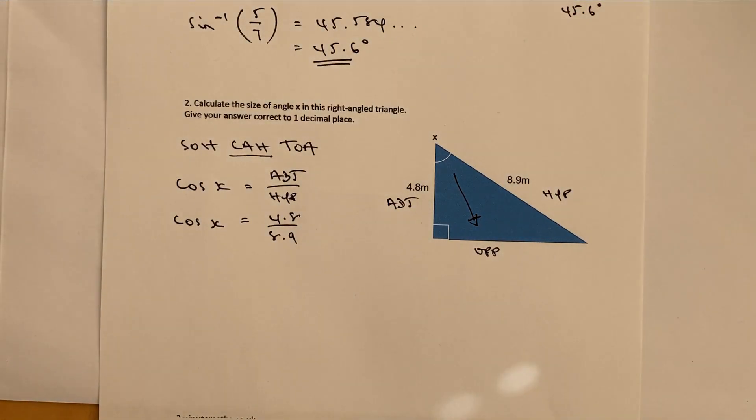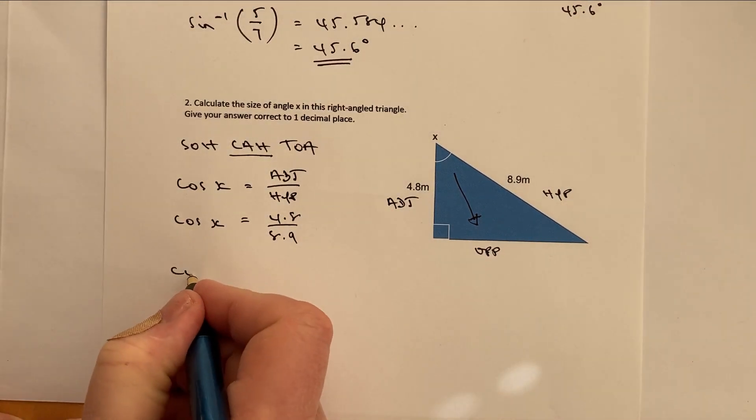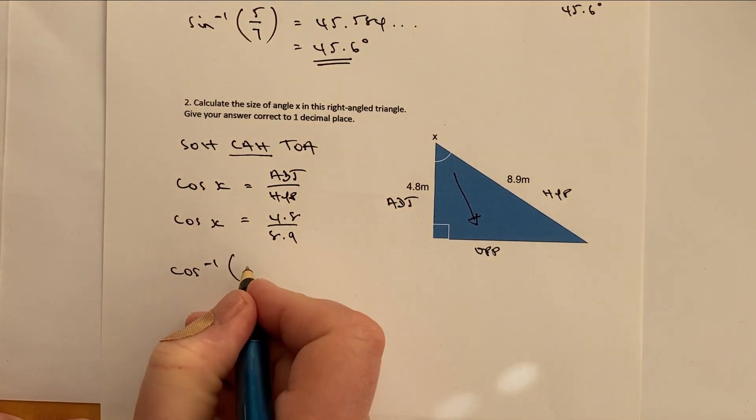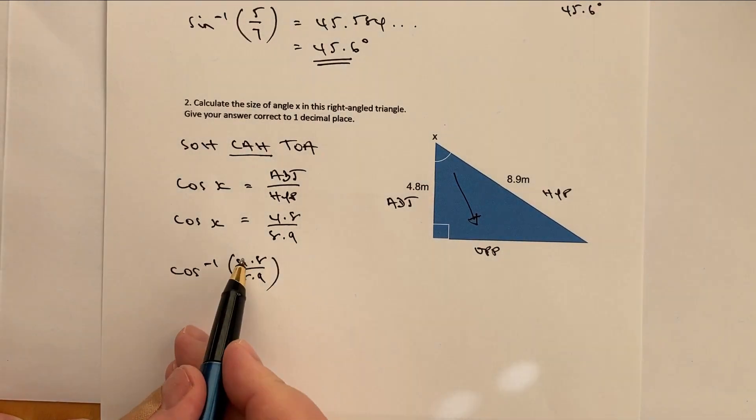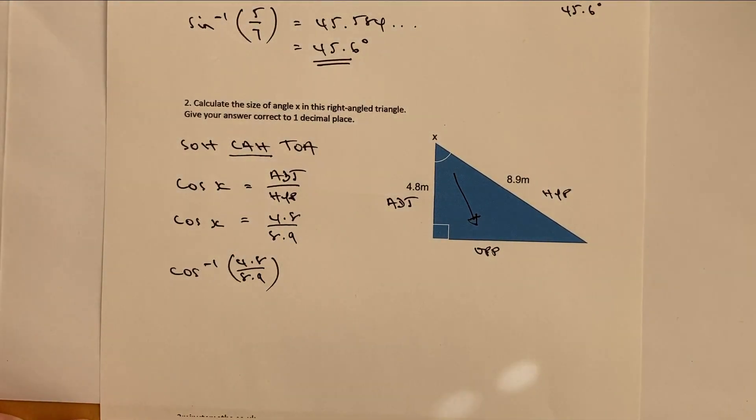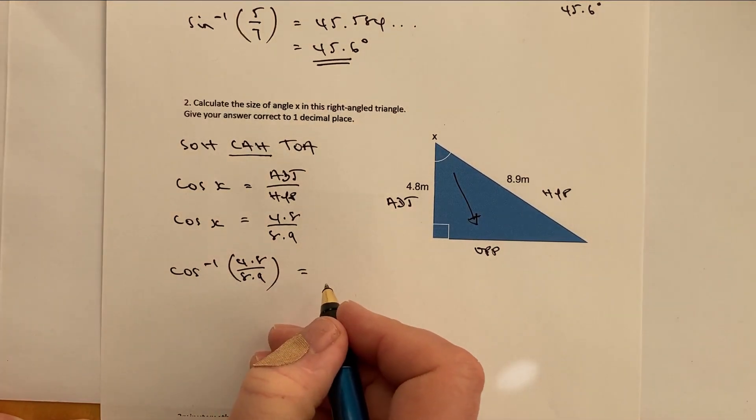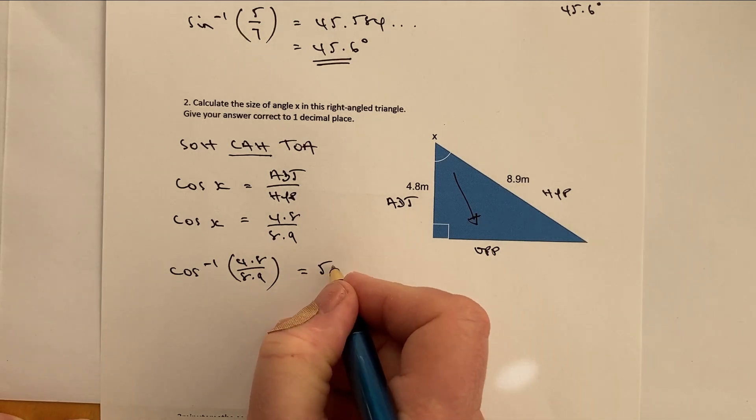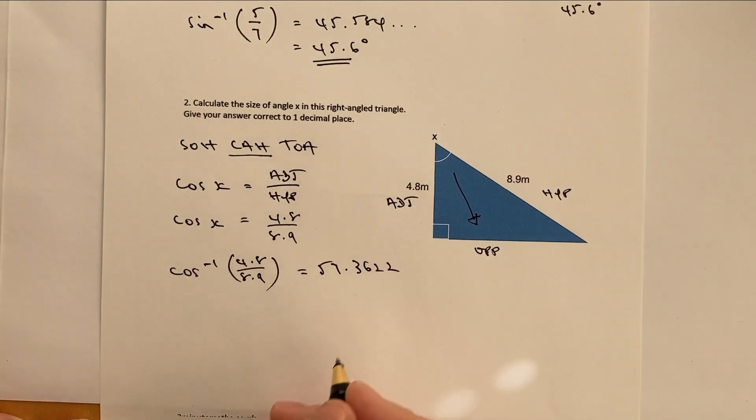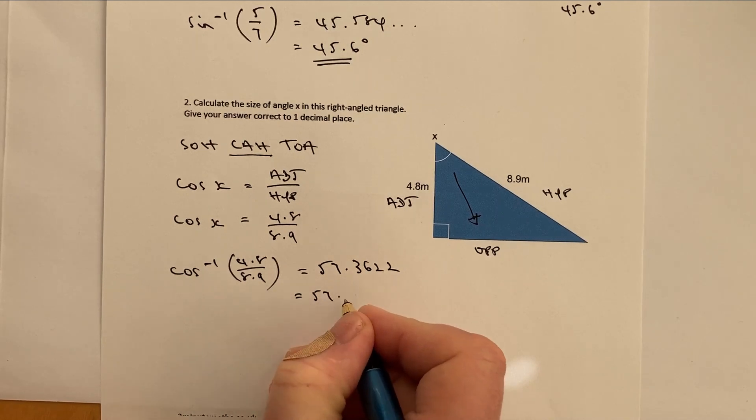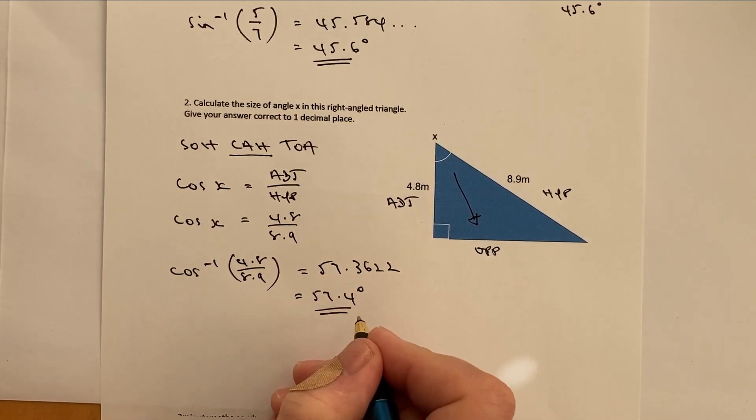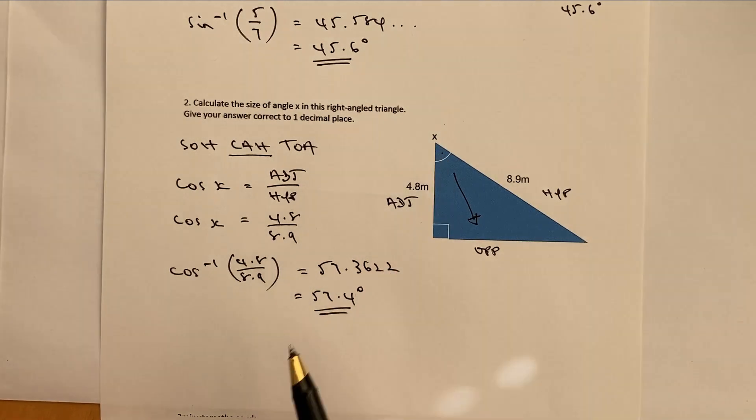So let's try that. I'm going to write this as cos to the power of minus 1, 4.8 divided by 8.9. And just use the fraction key for this. It's perfectly fine, making sure that you finish your bracket off. And when I press the equals on that, I'm going to get 57.3622. The question is asked correct to one decimal place. Well, to one decimal place, that would be 57.4 degrees, which is going to be the value of x.